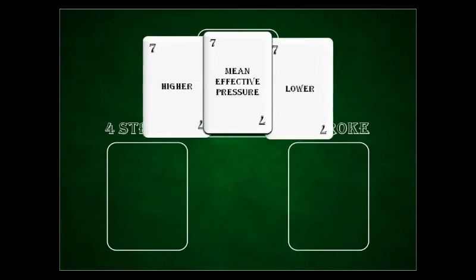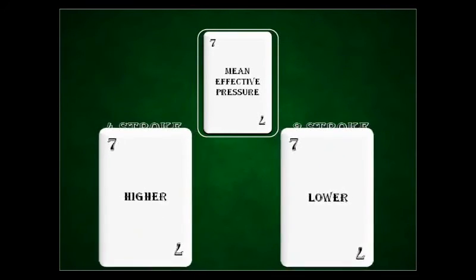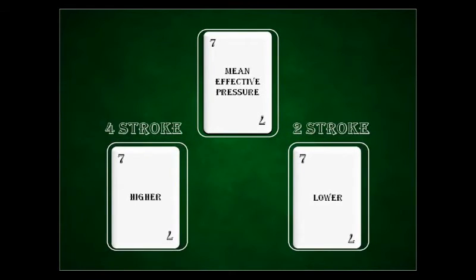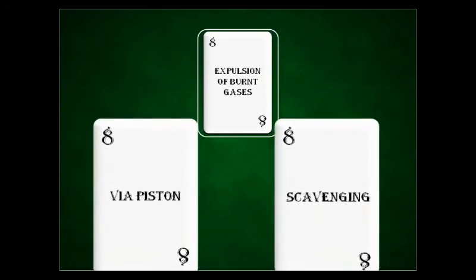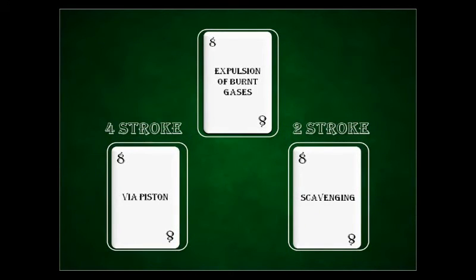Next is MEP, that is mean effective pressure. The 2-stroke engine's expelling of exhaust gases and filling of the cylinder with fresh mixture through the crankcase is far less effective than having separate exhaust and induction strokes. Thus, the mean effective cylinder pressure in 2-stroke units is far lower than in equivalent 4-stroke engines. Next is expansion of burnt gases. In a 4-stroke engine this is carried out via the piston, whereas in a 2-stroke engine it is carried out via a process named scavenging. Due to its inferior scavenging process, the 2-stroke engine can suffer from inadequate transfer of fresh mixture into the cylinder, excessively large amounts of residual exhaust gas remaining in the cylinder, and direct expulsion of fresh charge through the exhaust port, which greatly influences both power and fuel consumption.